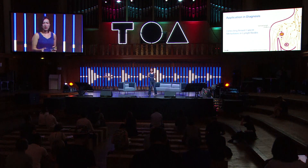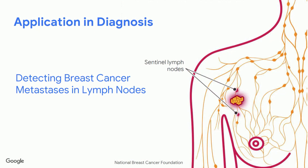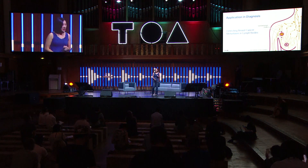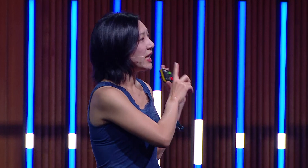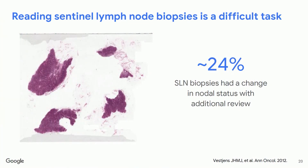Now I'll talk about an application in diagnosis where there's a lot of information for a doctor to sift through and a machine can potentially help. In this example we're looking at detecting breast cancer metastases in lymph nodes. When a patient is diagnosed with breast cancer, doctors look at lymph nodes next to the breast cancer that the cancer tends to spread to first. This is not an easy task — each image of a lymph node is about 10 gigapixels, equivalent to about 1,000 consumer photos, and you're looking for very subtle findings like a few clusters of cells.